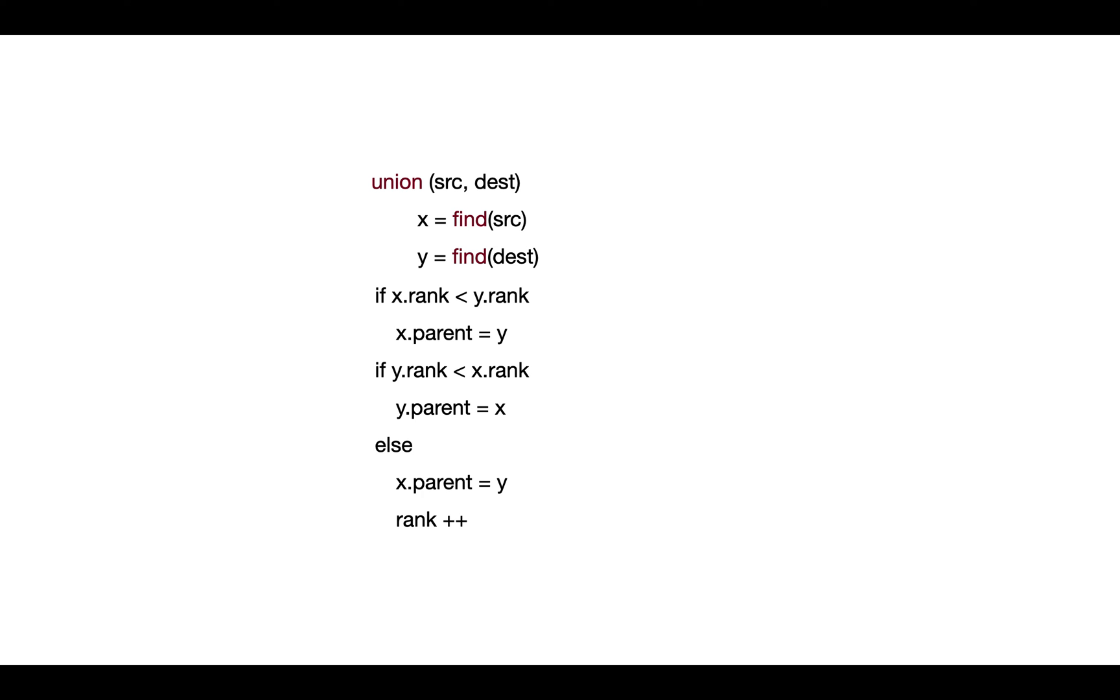So this is how find and union works. We will use union by rank and path compression based implementation to detect cycles in a graph in order to construct the MST by Kruskal's algorithm. So let's do that from the next lecture. Let's implement the logic in the code.